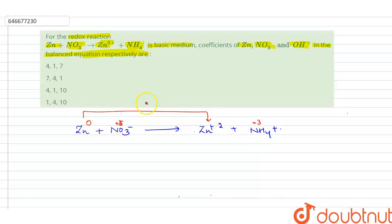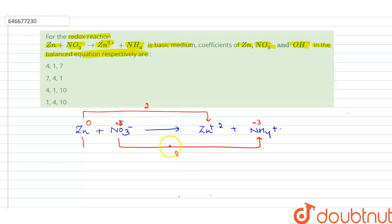So the change in oxidation state for zinc is 2, and for nitrogen it is 8. To equalize the changes in oxidation state, we multiply the zinc half-reaction by 4, so that we get 8 on both sides.